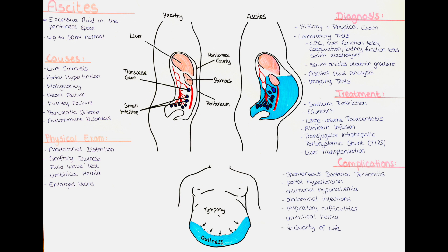Ascites can be associated with protein and nutrient loss. The accumulation of fluid in the abdomen can impair appetite, nutrient absorption, and lead to malnutrition. This can result in weight loss, muscle wasting, and overall decline in health. Ascites and its associated complications can significantly impact a person's quality of life. Symptoms such as abdominal distension, discomfort, breathlessness, and fatigue can limit daily activities and overall well-being.